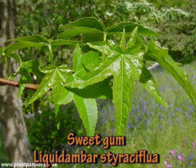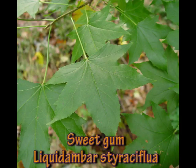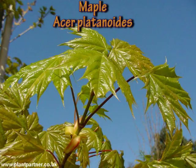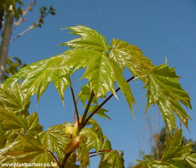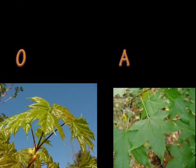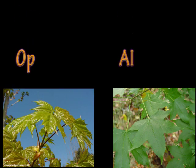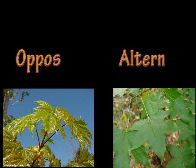Again, it looks like a maple with sort of palmate leaves, but when you look closely you can see that the leaves are actually alternate — and that's Liquidambar styraciflua. Then on the next one we're back to the maple with opposite leaves. This is why it's so important to look closely and see whether the leaves are alternate or opposite.